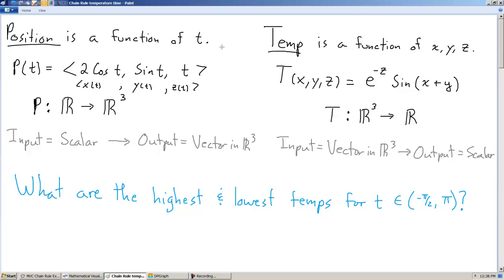Position is a function of t, time, and the position function of t is given by 2 cosine of t, sine of t, and t, where those are the x, y, and z components of this function respectively.